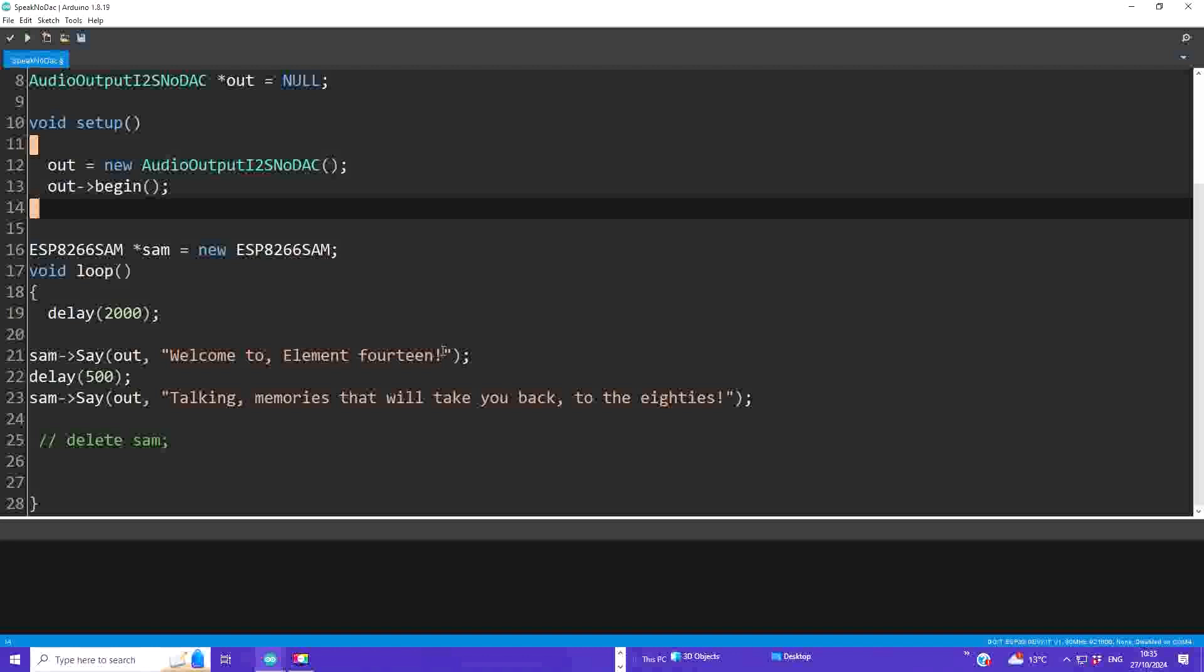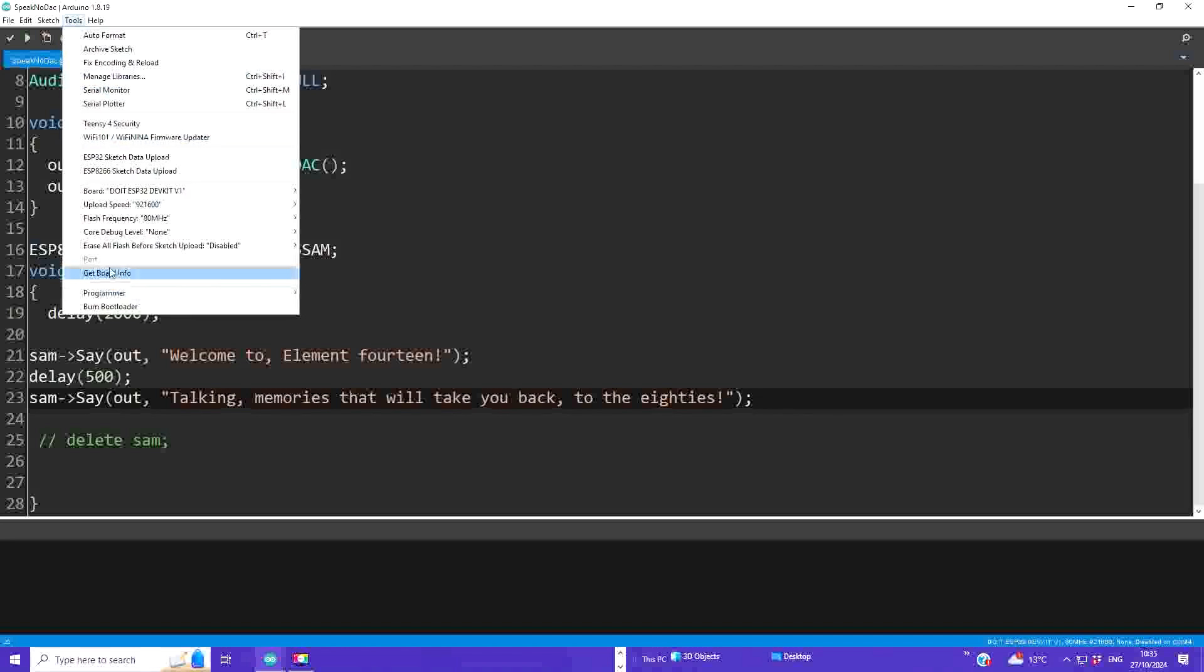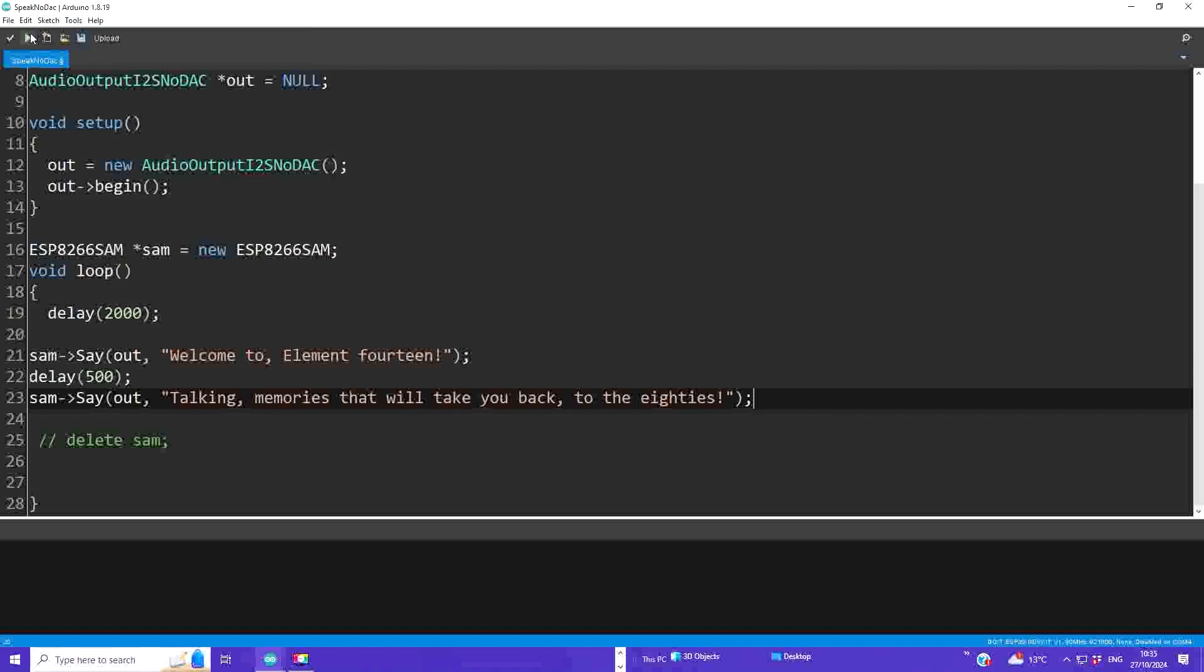I make it say welcome to Element 14, talking memories that will take you back to the 80s. Of course, you can change that to whatever you like and this is basically a speech printer. Whatever you put in here it will say or it will try to say. You can have some fun playing around with that and once you select the right COM port and then you press compile and upload and it will start making sound. The compilation of this one might take a while because the audio library is quite huge. Don't worry about that, just wait and see what happens. It might take a few minutes, but then you have all the fun at your fingertips and it will sound like this.